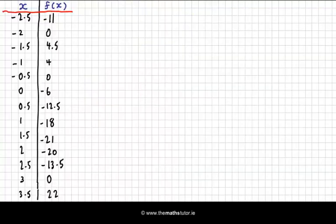Here we have on the left-hand column all of the different input values and on the right-hand side the output values. These give us our paired coordinates or ordered pairs. Our y-axis needs to go down as far as -21 and up as high as 22, so let's construct our y-axis.